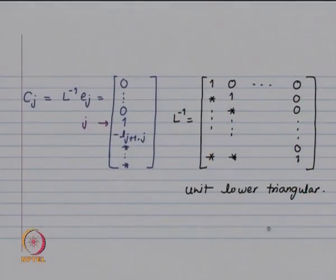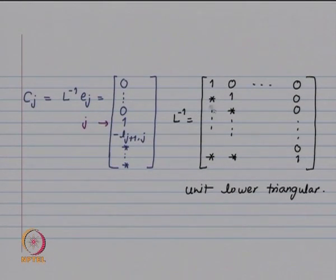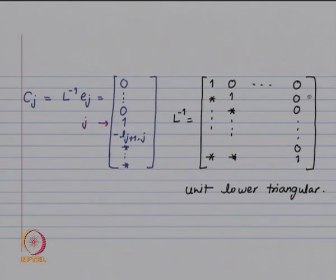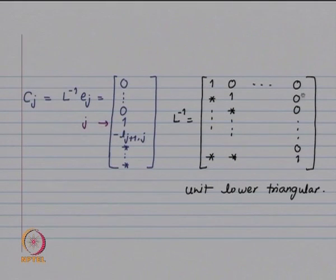This is what makes the inverse unit lower triangular. When we look at L inverse, it has 1s along the diagonal, entries marked by star (either 0 or non-zero) below the diagonal, and all 0s above. So we get L inverse is also unit lower triangular.